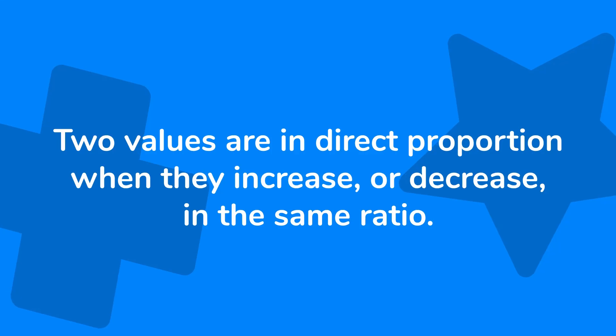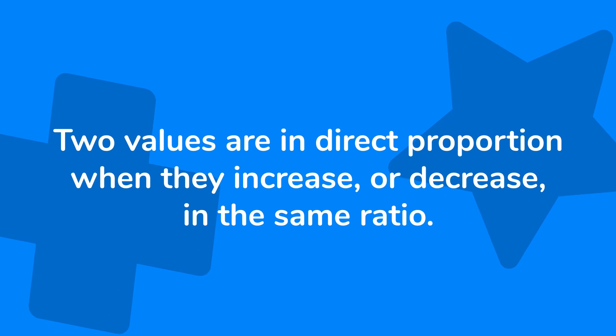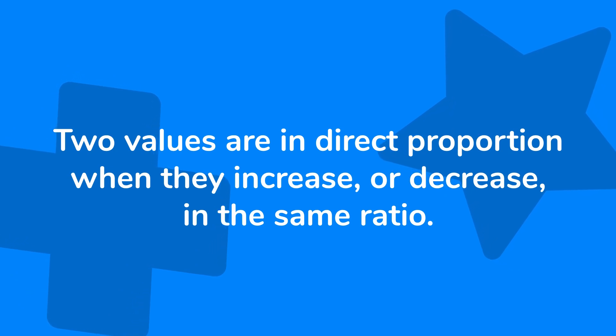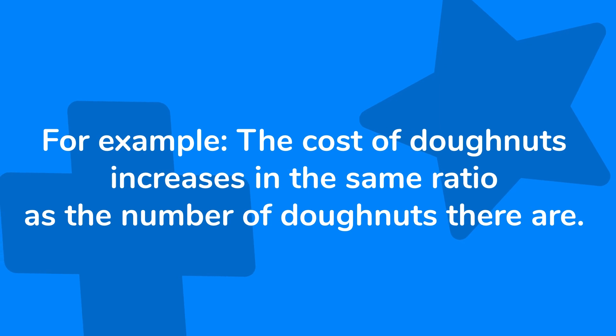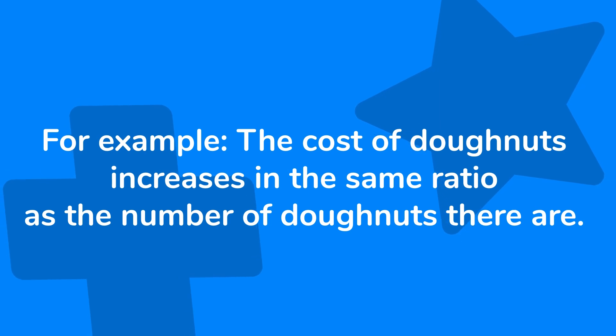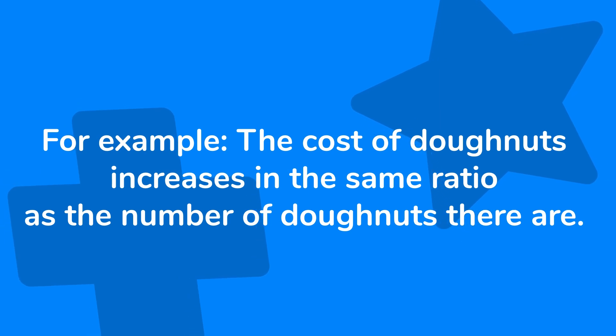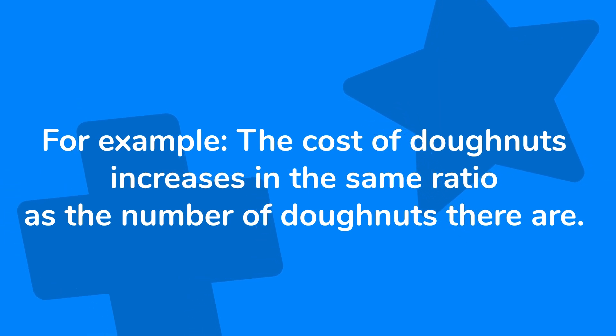Hi, I'm Molly from Doodle. Today we're learning how to solve problems involving direct proportion. Let's get started. As a reminder, two values are in direct proportion when they increase or decrease in the same ratio. For example, the cost of doughnuts increases in the same ratio as the number of doughnuts there are.